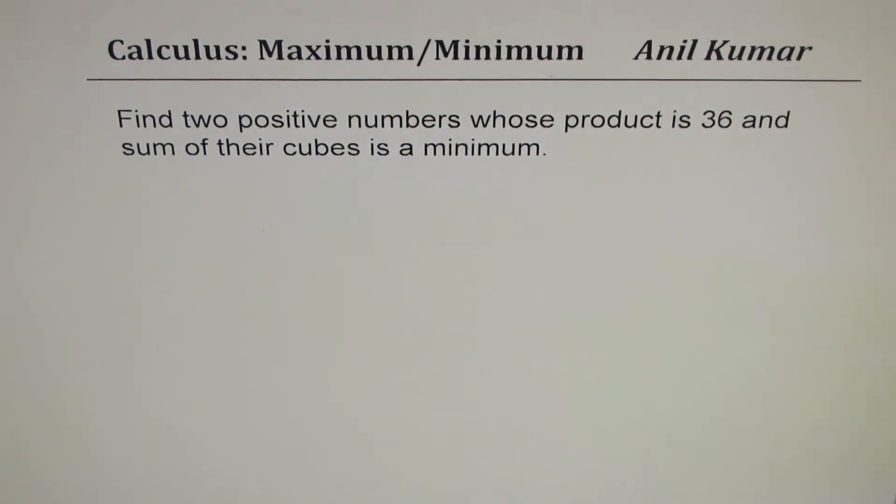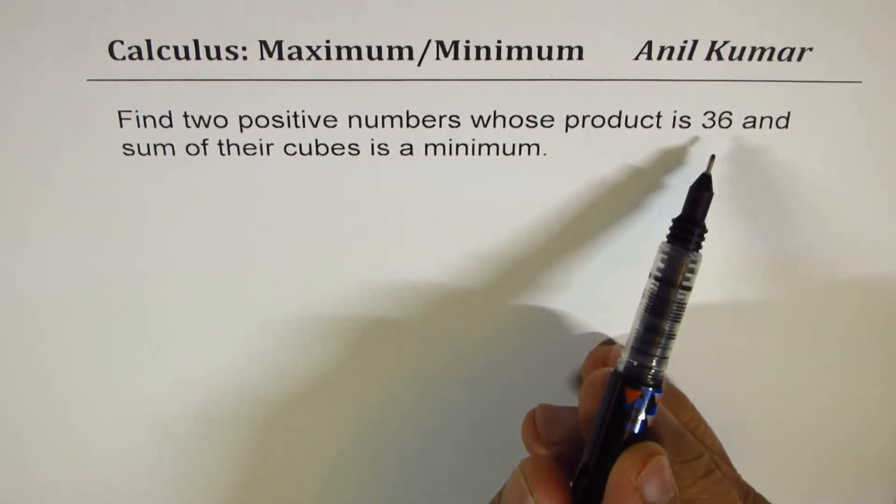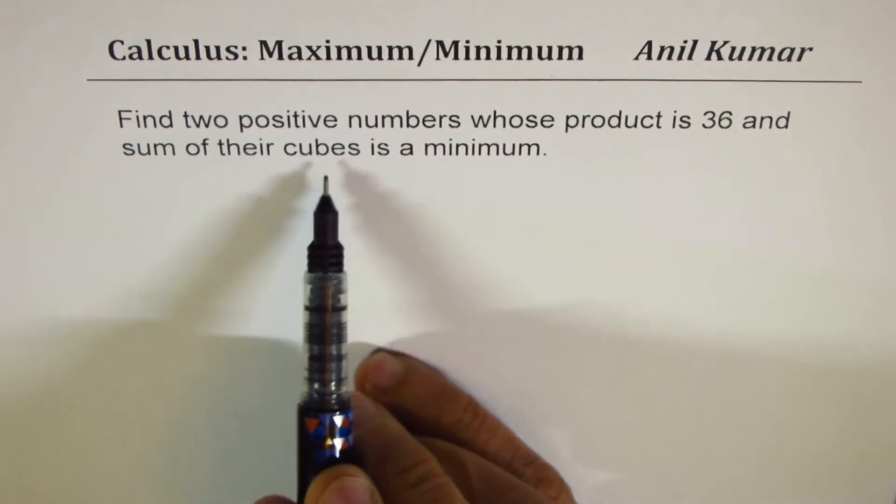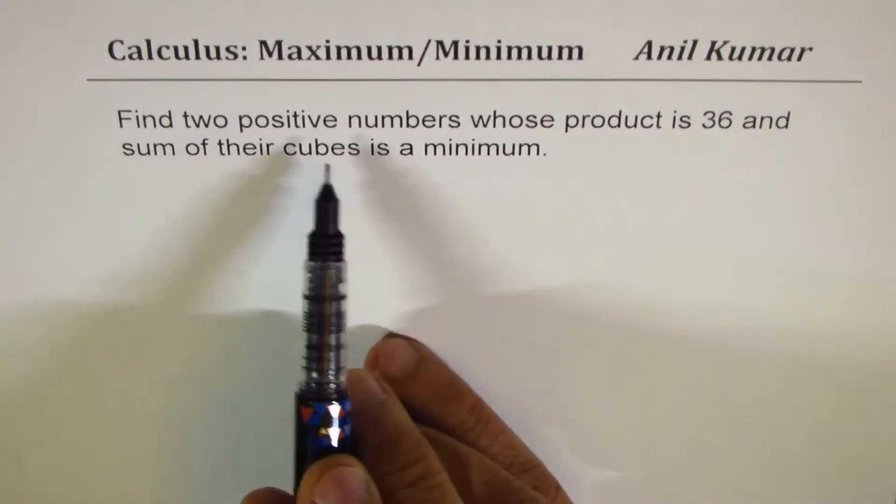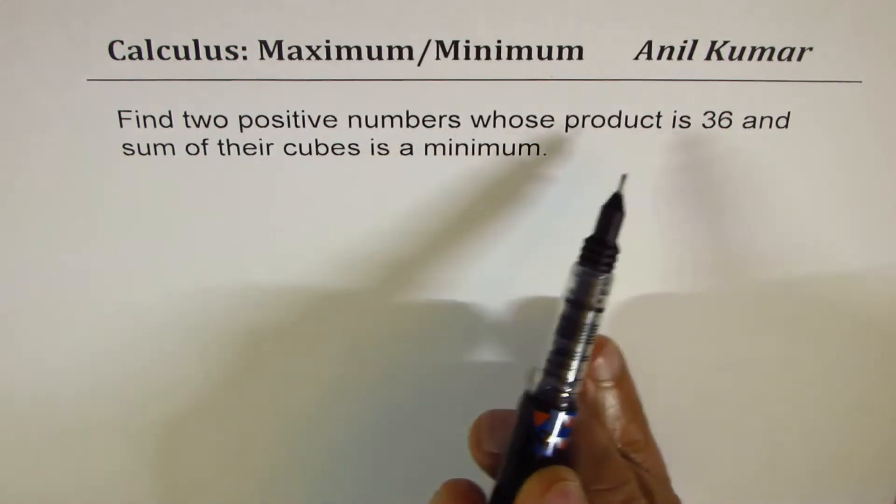I'm Anil Kumar sharing with you a question from my subscriber, so let me thank all my subscribers for posting excellent questions and taking keen interest in my YouTube channel. The question here is: find two positive numbers whose product is 36 and the sum of their cubes is minimum.